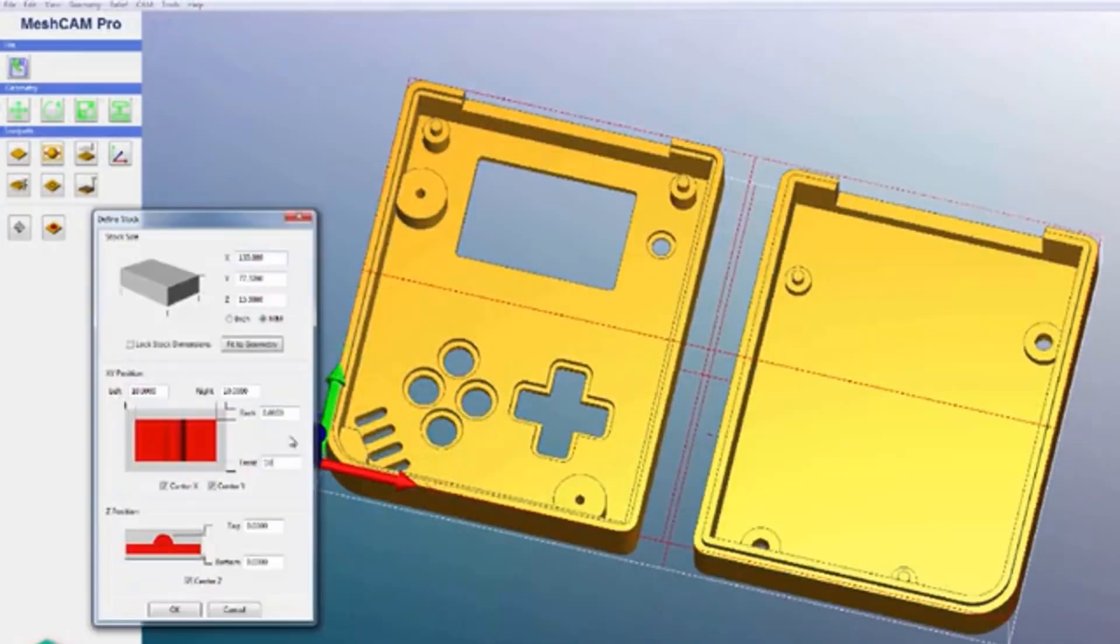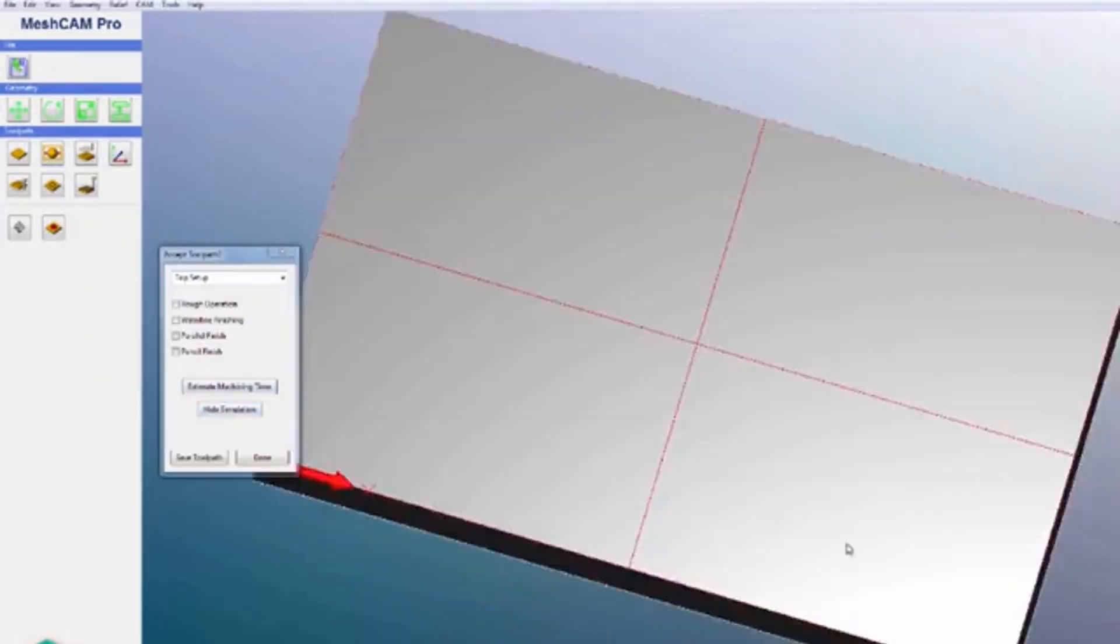We include Carbide Motion, our motion controller, and MeshCAM, the CAM software that generates the G-code for the Nomad.